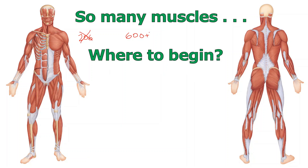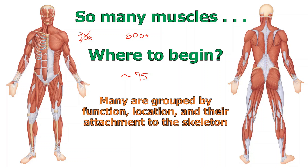First, let's try to limit the conversation to skeletal muscle, like you see here on these two images on the left and right side of the screen. When you do that, you reduce the number of muscles you have to learn by quite a bit. So we're going to try to cover about 95 or so skeletal muscles when we're all done with our upcoming lectures. Many are grouped — think about hamstrings or quadriceps — and they're grouped by function, location, and how they attach themselves to the skeleton.